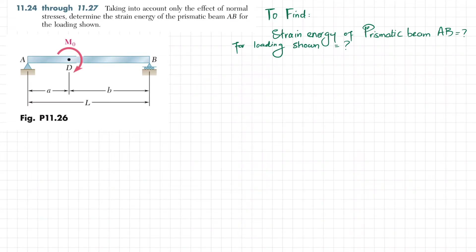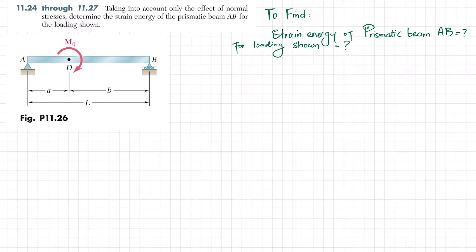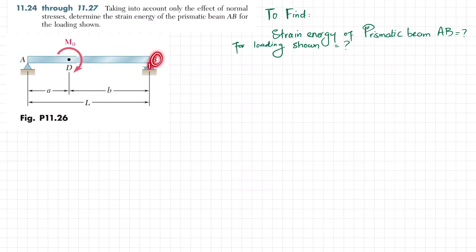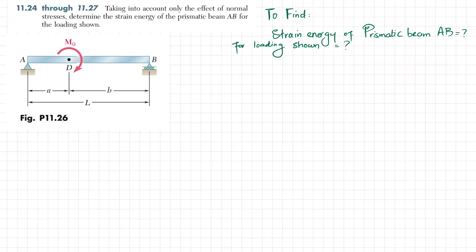Welcome back. Problem 11.26: taking into account only the effect of normal stresses, determine the strain energy of the prismatic beam AB under the given loading. Beam AB is fixed at point A and has a roller support at point B. At point D, a moment M0 is applied. The distance from A to D is 'a', from D to B is 'b', and the total length of the beam is L.